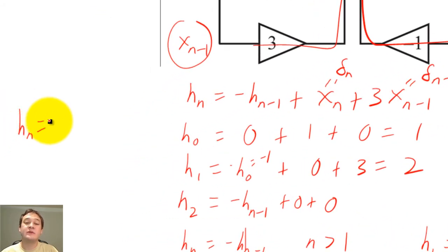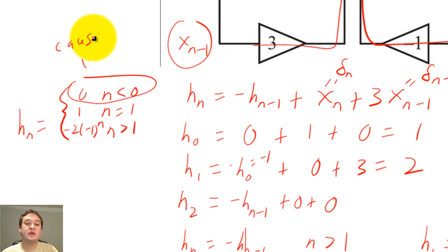Finally, we summarize h of n as a piecewise function. Since this unit pulse response is 0 for n less than 0, the system is also a causal system.